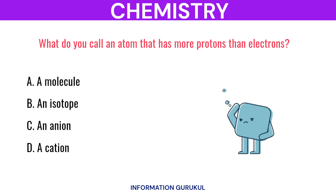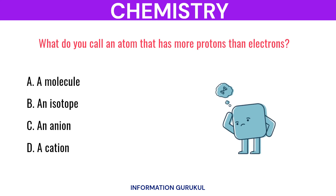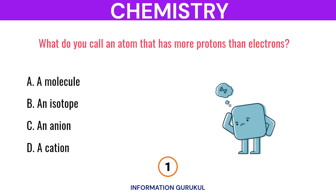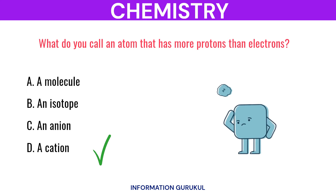What do you call an atom that has more protons than electrons? A cation.